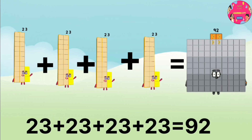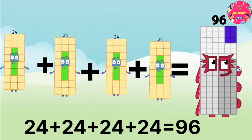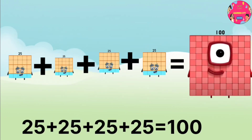23 plus 23 plus 23 plus 23 equals 92. 24 plus 24 plus 24 plus 24 equals 96. 25 plus 25 plus 25 plus 25 equals 100.